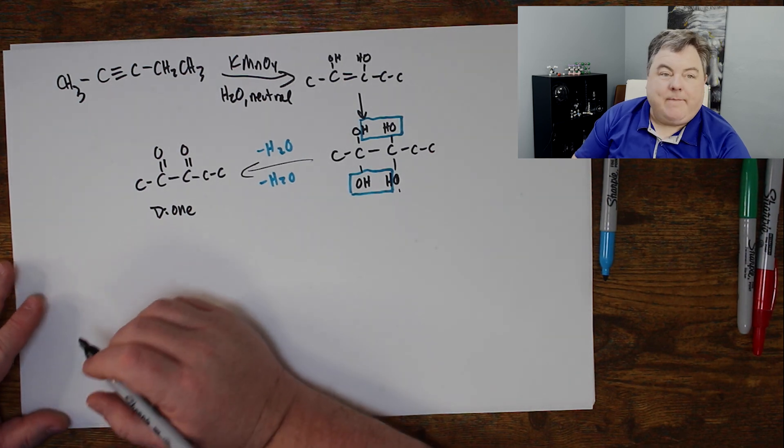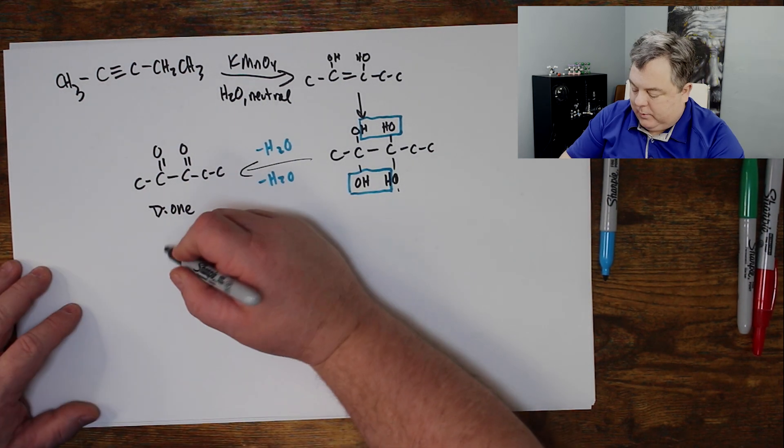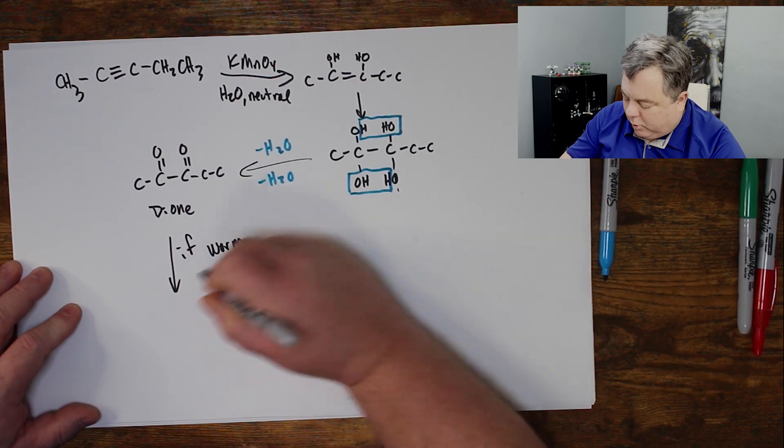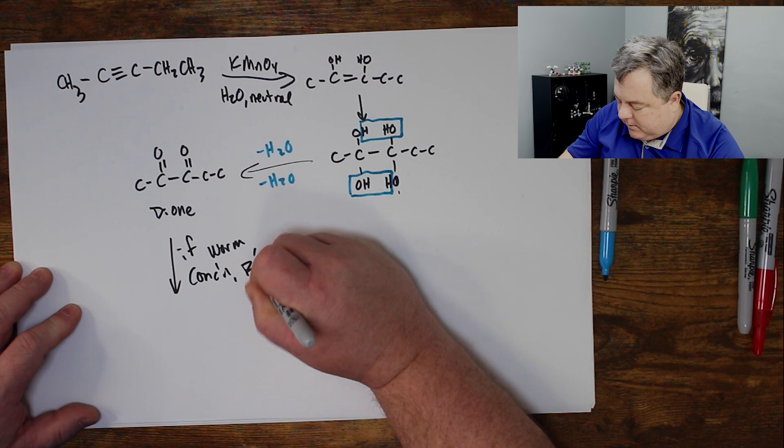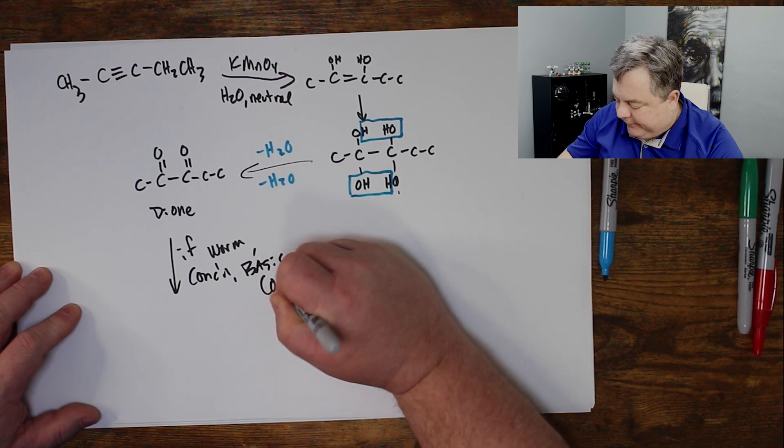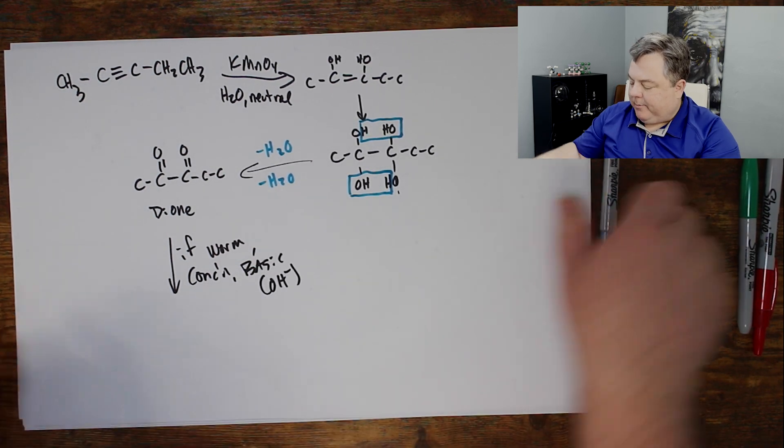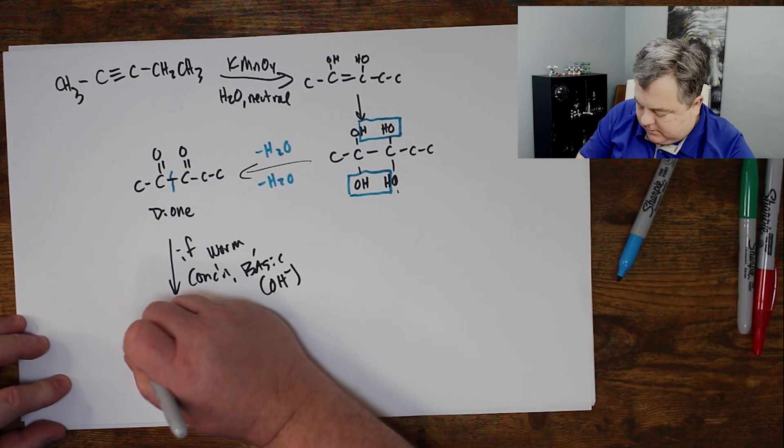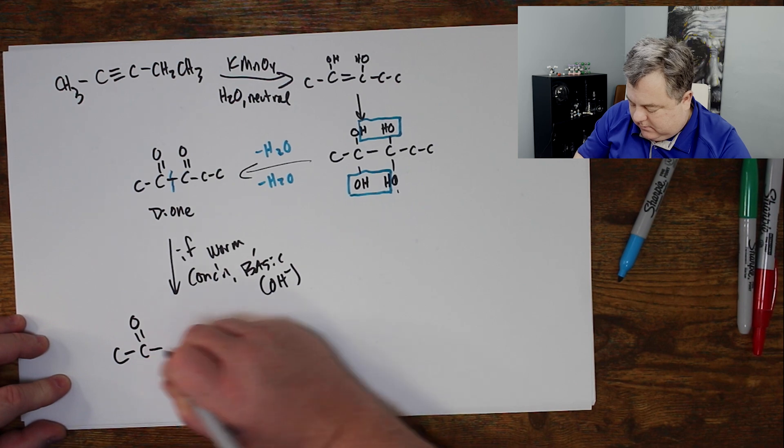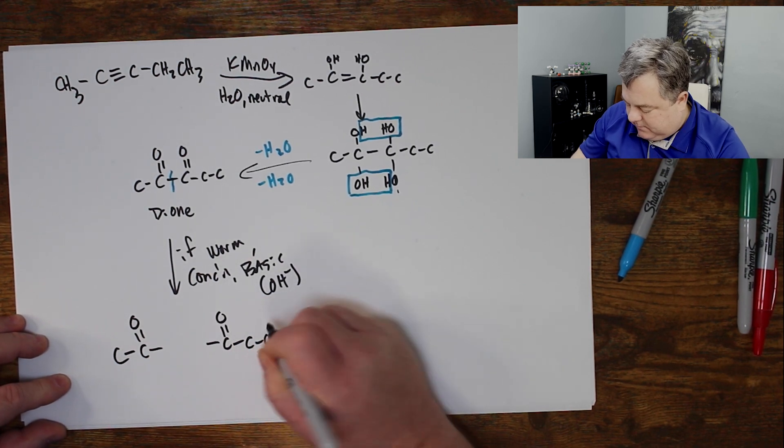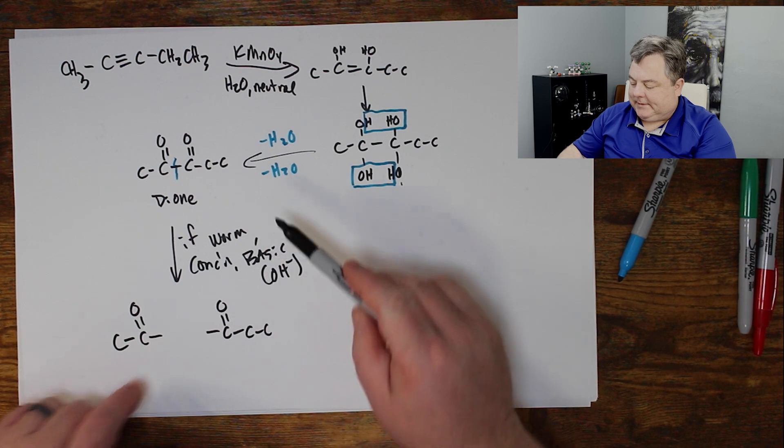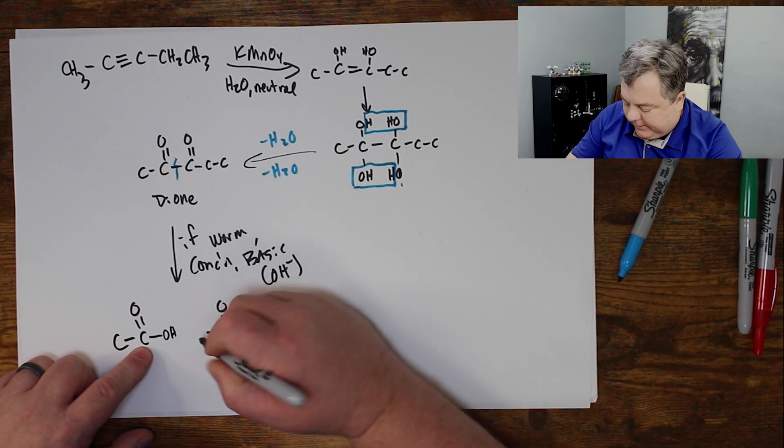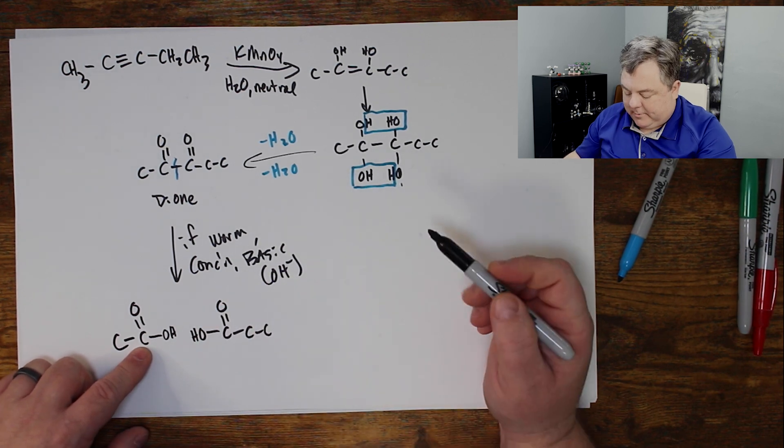But if it's warm, concentrated, it would keep going. If it's warm, concentrated, or basic, which means maybe there's hydroxide in there, it will keep going. This is where we cleave it. I have these sticky spots. It's being oxidized, so I need more oxygen. So I go from two carbon-oxygen bonds to three, and it makes carboxylic acids.